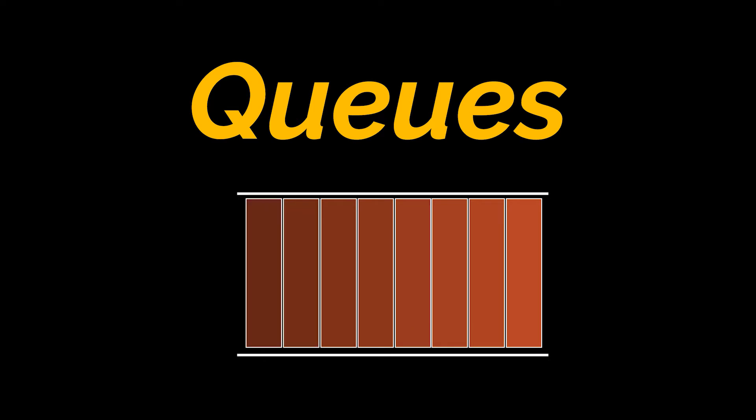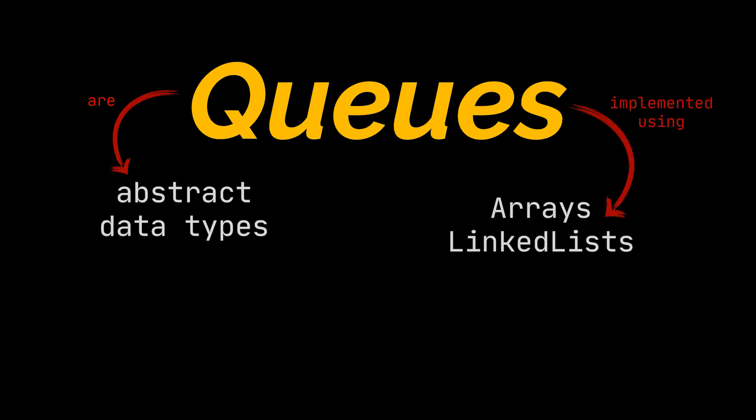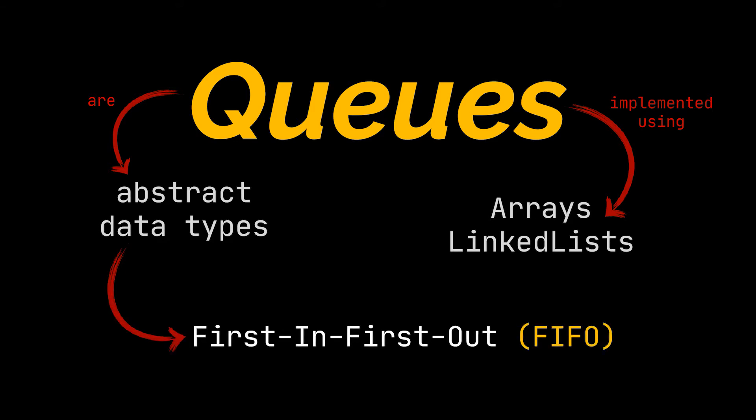We are also going to implement these different operations. Queues are abstract data types and can be implemented using arrays or linked lists, similarly to the list abstract data type. What defines a queue and makes it different from others is that it follows the first in first out structure, aka the FIFO structure, which means the first item we insert is the first item we remove.